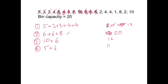2. Well, the first available one is bin number 3. So it's going in there, giving me a total of 18 now. Cross the 2 off. The first available one for the 4 is that one. Cross the 4 off. That gives me a total of 15 in there. The next one is a 4. The first available one is that one. That gives me a total of 19. Cross the 4 off.